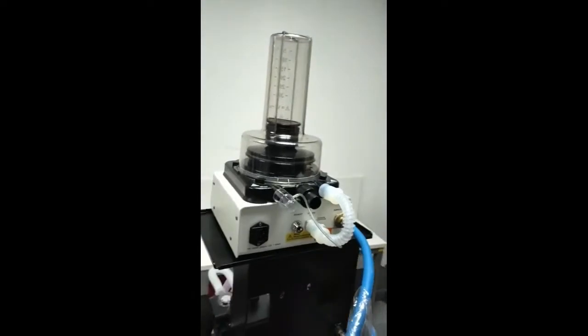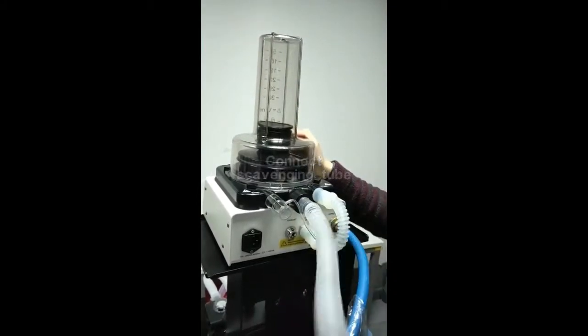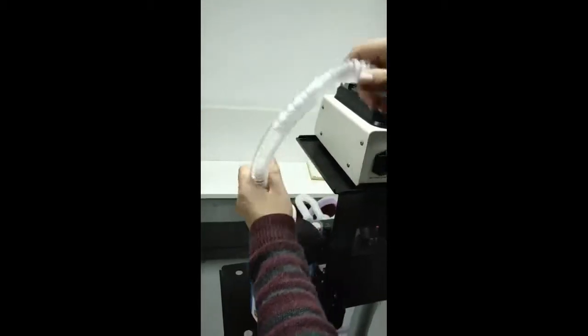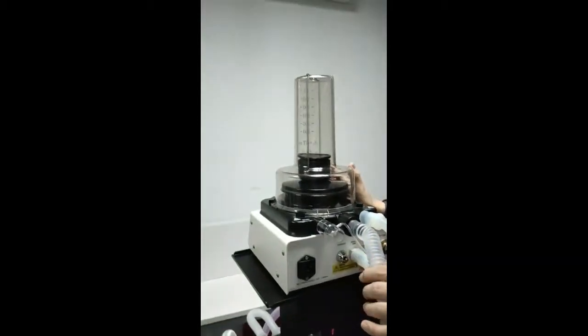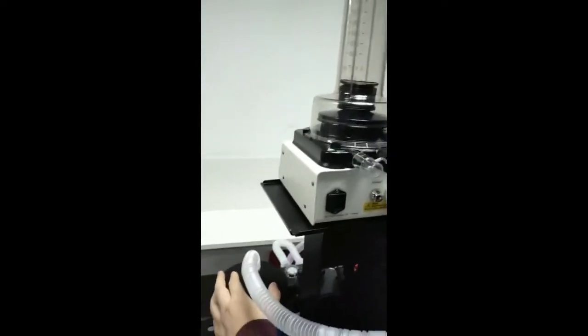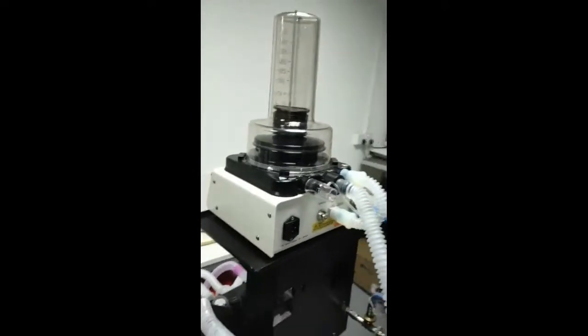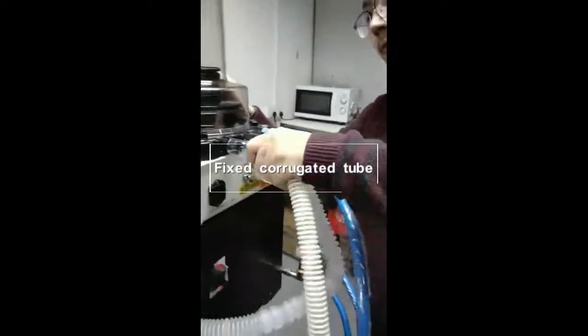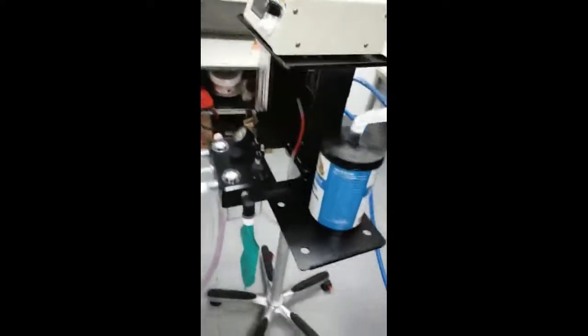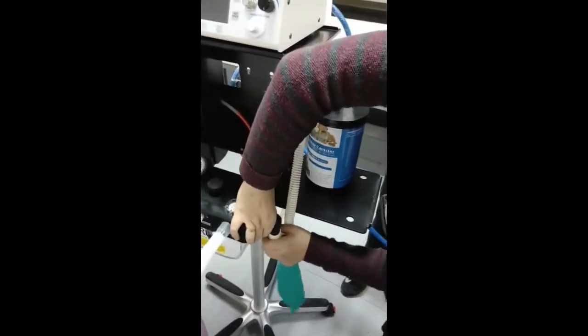Next, we are going to connect the scavenging hose to the canister. So the extra waste gas from the anesthesia machine will go through this hose to the canister. Next, we are going to fix this hose. And this side we connect to an anesthesia machine where there is an air bag fixed.